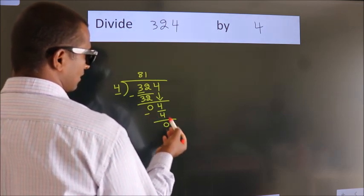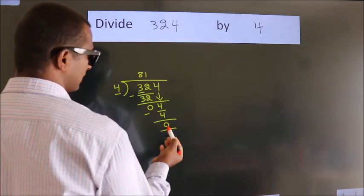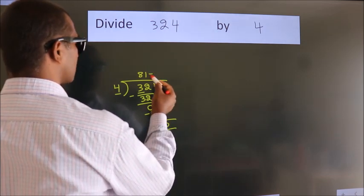After this, there are no more numbers to bring down. We got remainder 0. So this is our quotient.